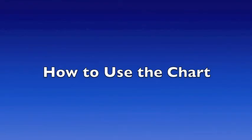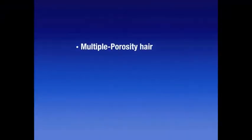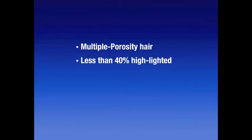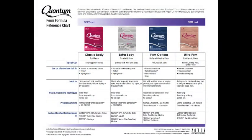Here's an example of how to use the chart. During our preliminary consultation we determined that we were working with multiple porosity hair. The hair is less than 40% highlighted using 20 volume. Look at the processing time area on the chart — what perms are appropriate to be used on highlighted hair less than 40% using 20 volume?